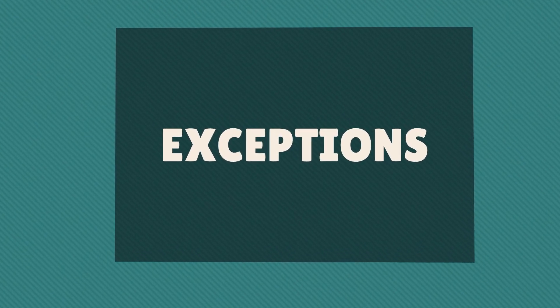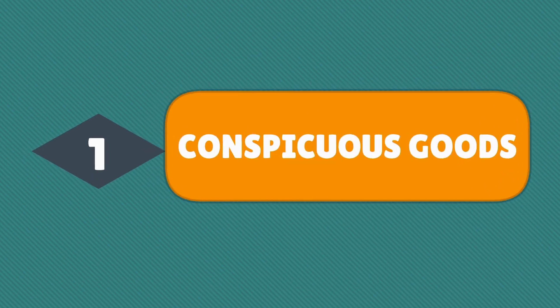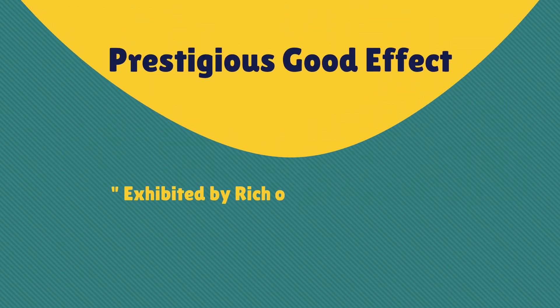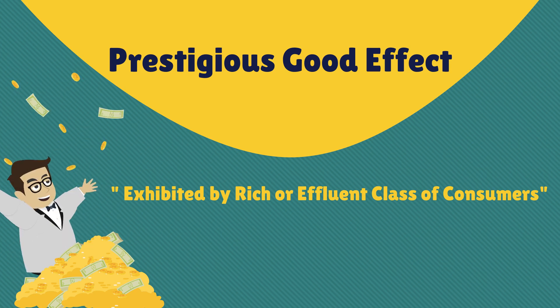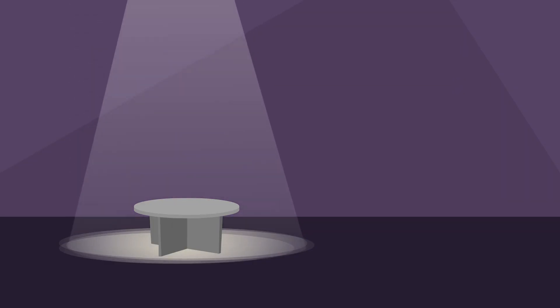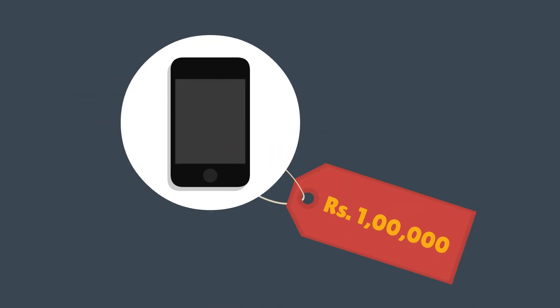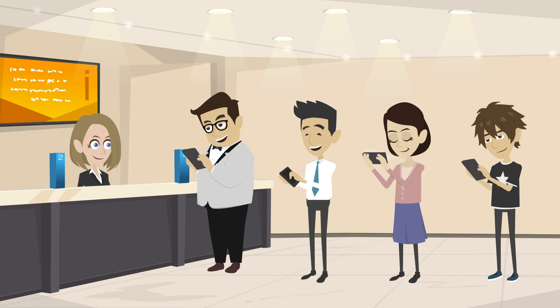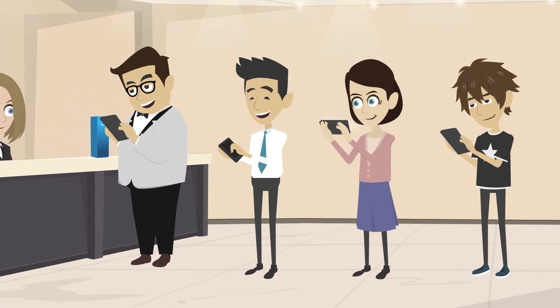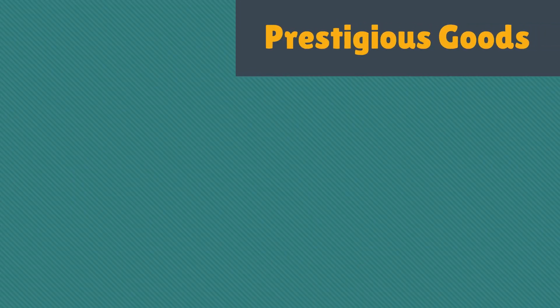The first exception to the law of demand is conspicuous goods, or the prestigious good effect. This pattern is normally seen exhibited by the rich or affluent class of consumers. For example, during a new iPhone series release, when the price of the phone is at its peak, these consumers tend to buy the product — they are willing to pay this high price more so for its prestigious value.